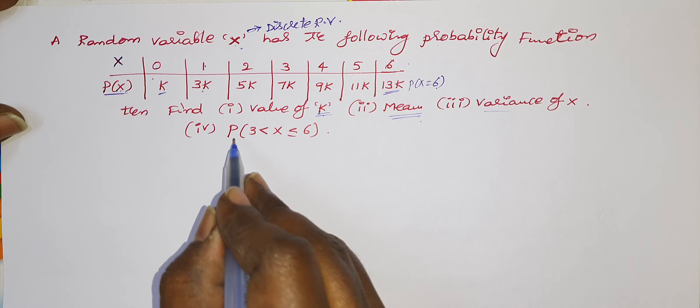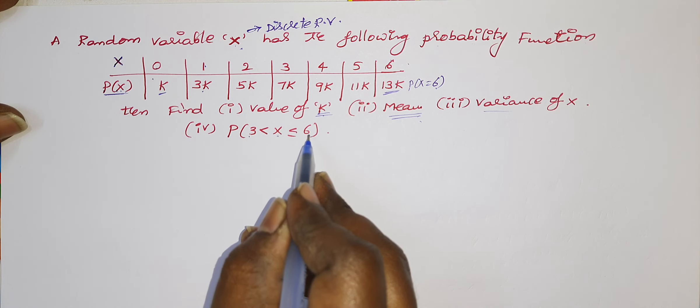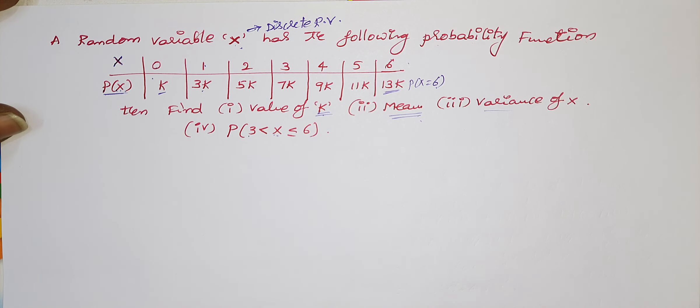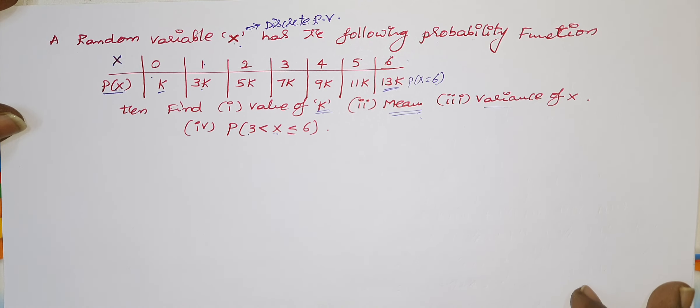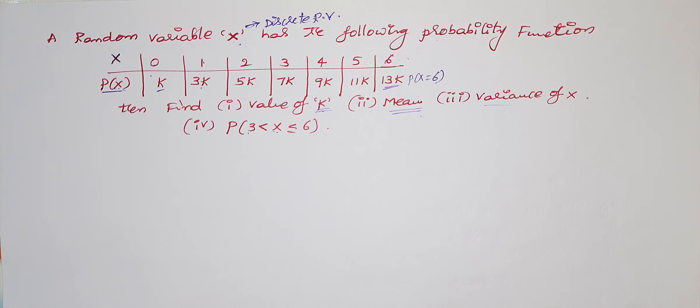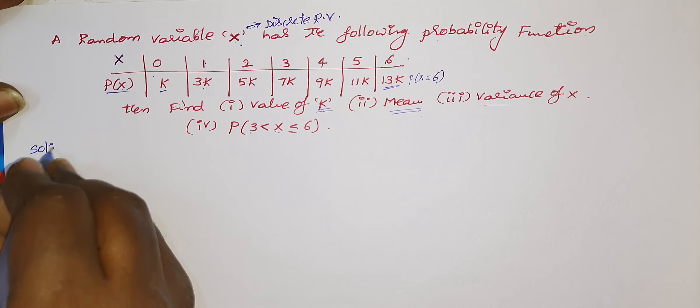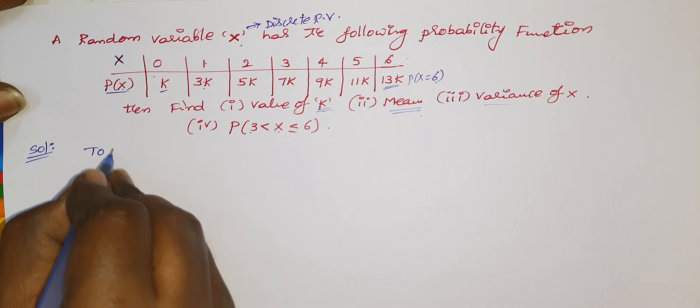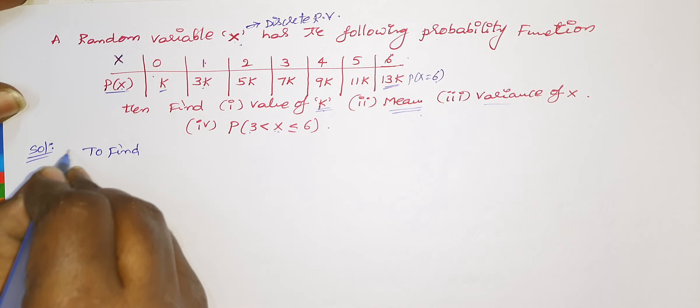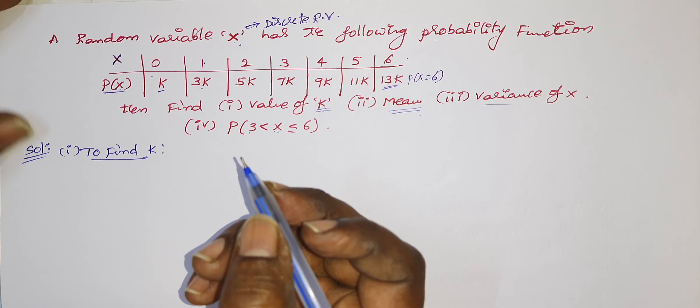We have to find value of k. Sometimes an unknown value is inserted in the data at the place of probabilities. So you have to find out k value first. After that, you have to find out the mean of the discrete random variable x and variance of the random variable x.